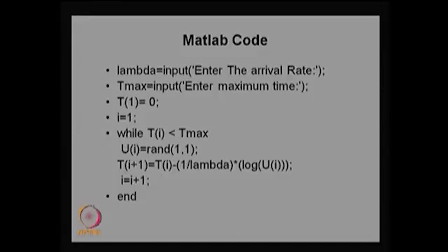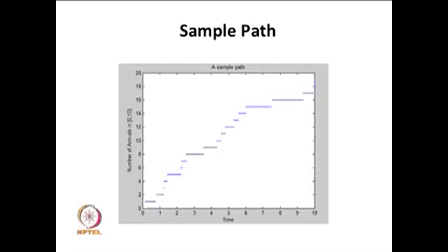I can shift the time event by T of i+1 by adding the next exponentially distributed time event, then go for plotting the sample path. This is one sample path in which over the time from 0 to 10, the number of arrivals occurs in the interval 0 to 10. When one arrival occurs, the N(t) value is incremented by 1 and it holds that same value. When the second arrival occurs, the increment is taken to 2, and so on.